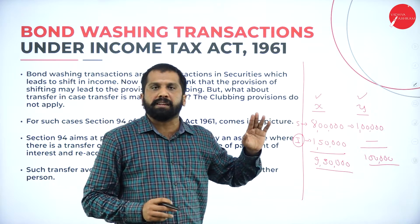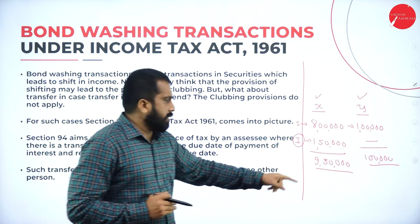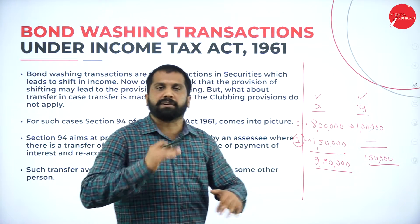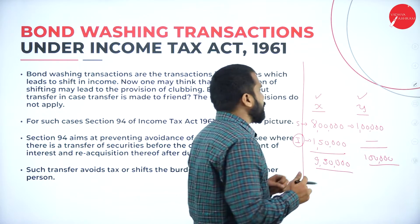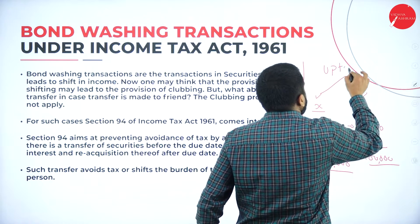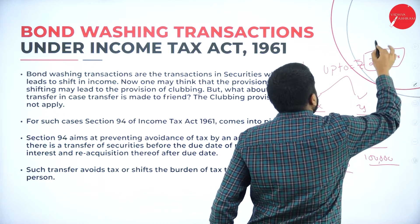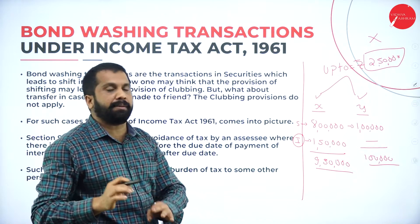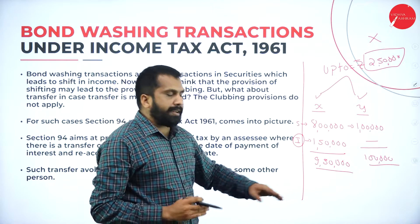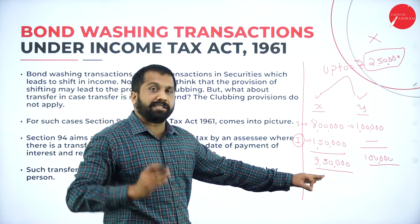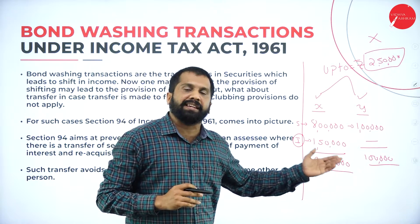Your closest friend's income is only 1 lakh. You are supposed to pay huge tax. Your friend has to pay no tax. Why? Because what is the basic limit? Up to 2 lakh 50,000 — no tax. From your 9 lakh 50, minus 2 lakh 50, you are supposed to pay tax on 7 lakh. From 1 lakh, he does not need to pay any tax.